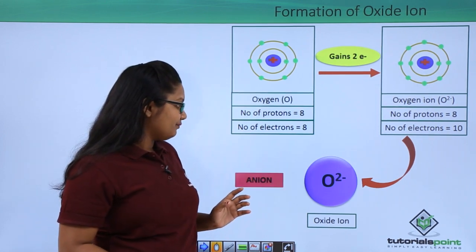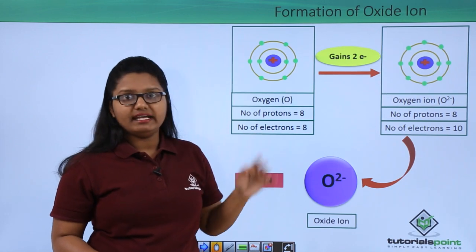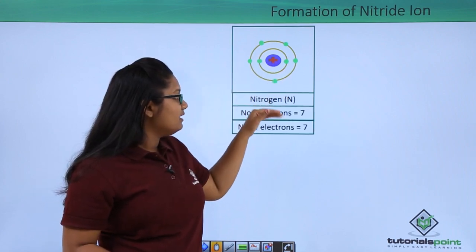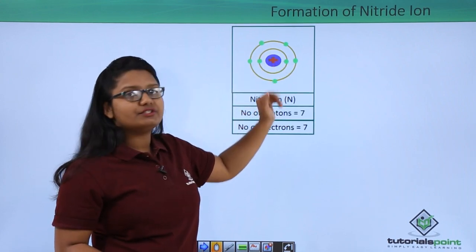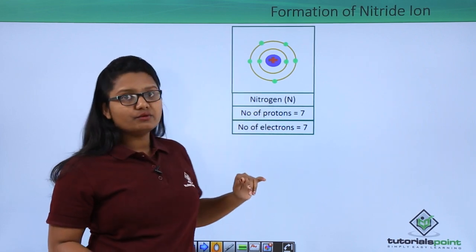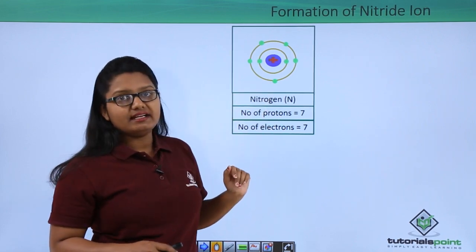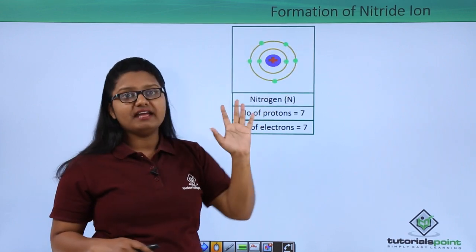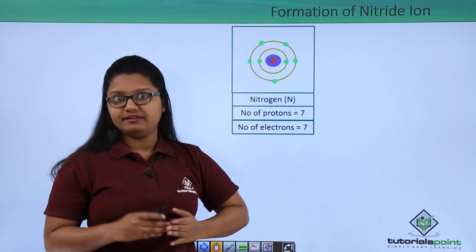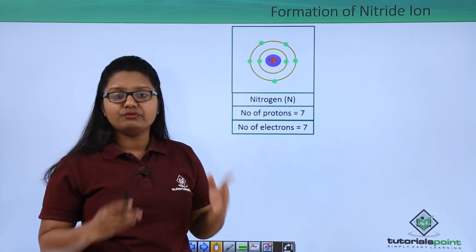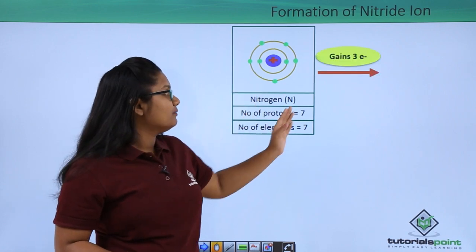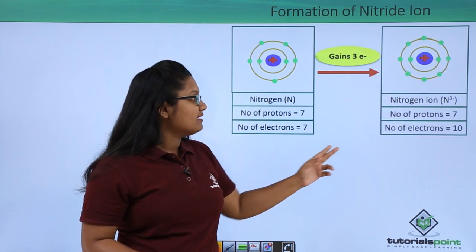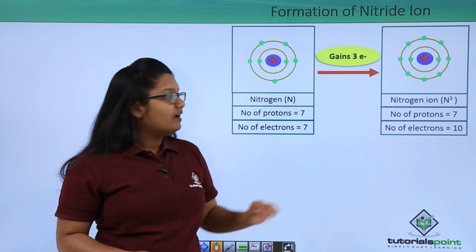Now let us look at some more negative ions. A nitrogen atom has seven protons and seven electrons arranged in two shells, making it a neutral atom. The outermost shell has five electrons, meaning it is not fully filled and requires three more electrons. So this nitrogen atom gains three electrons.